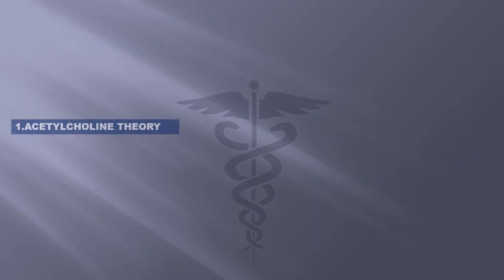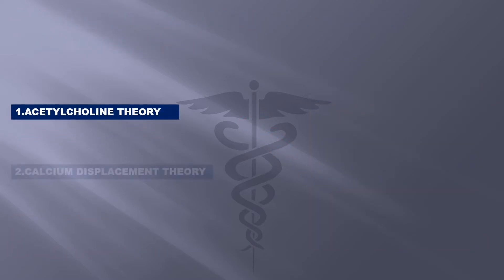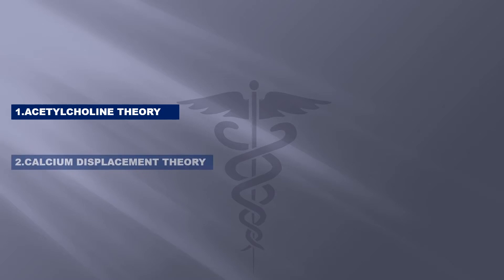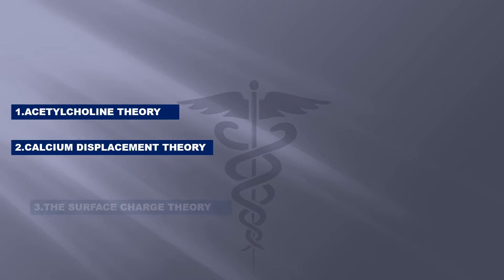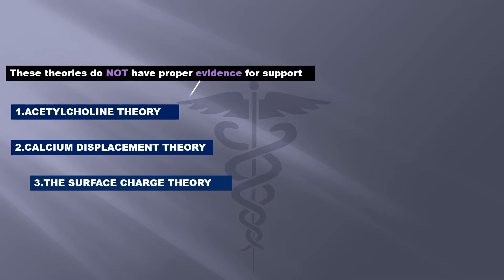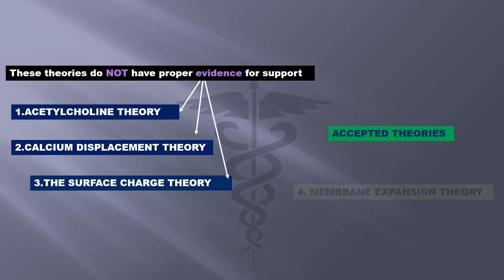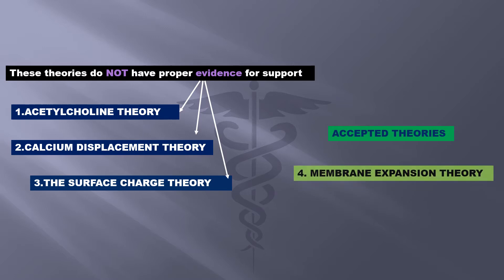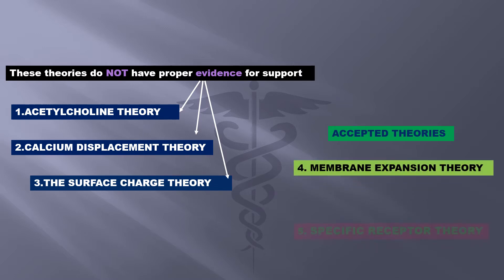The five theories are: 1. Acetylcholine theory. 2. Calcium displacement theory. 3. The surface charge theory. These three theories do not have proper evidence for support. The accepted theories are 4. The membrane expansion theory, and 5. The specific receptor theory.